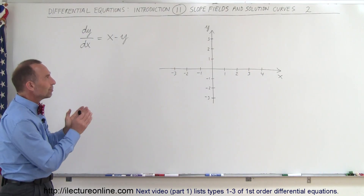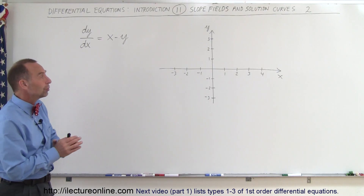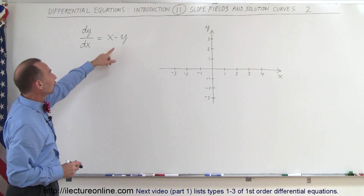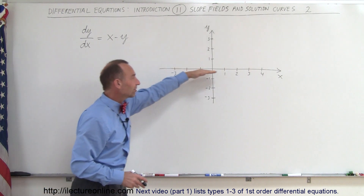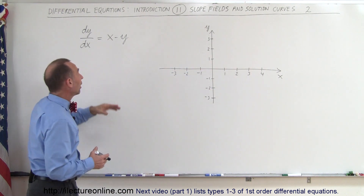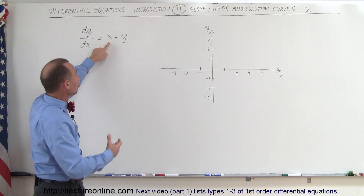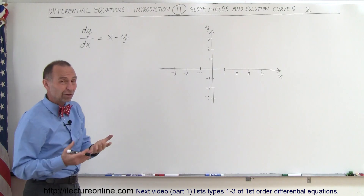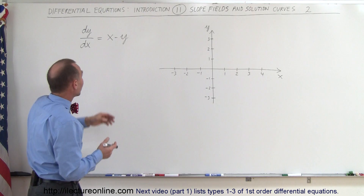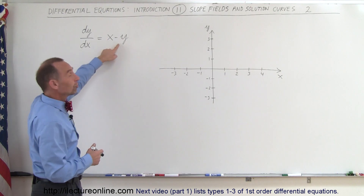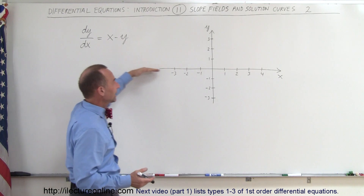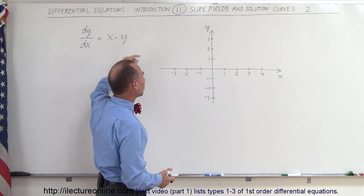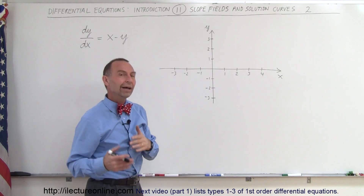How do we draw the slope field? We do it one row at a time. We're going to assume that y is equal to 0, which means we're going to be on the x-axis, and the slope of the possible solution curves depends upon the value of x. When x equals 0 the slope will be 0, when x equals 1 the slope will be 1, and so forth as long as y equals 0. Then we'll move up one row and assume y equals 1, then y equals 2, and so forth.